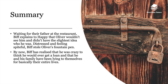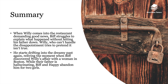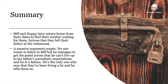By now, Biff realises he's crazy to think he would ever have gotten a loan, and that he and his family have been lying to themselves their entire lives. When Willy arrives at the restaurant demanding good news, Biff struggles to explain what's happened without letting his father down. Willy, who can't handle the disappointment, starts drifting into the dreamy past, reliving the moment when Biff discovers Willy's affair with a woman in Boston. While their father is hallucinating, Biff and Happy abandon him for two girls and later return home to find their mother waiting, furious that they left their father at the restaurant.